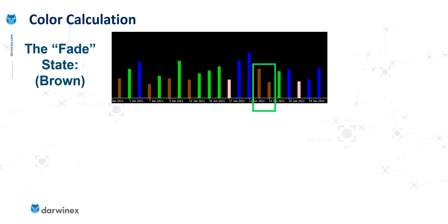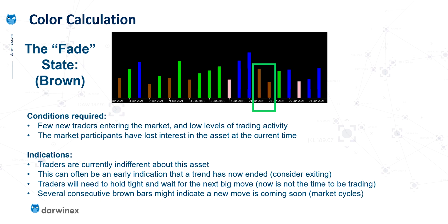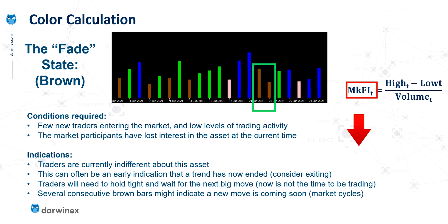Moving on to the fade state, represented by brown-coloured bars, the conditions are quite different — the opposite, in fact. Here we're looking for a visible decrease in the Market Facilitation Index, but also a decrease in volume. These two factors indicate that there are not many new traders entering the market, trading activity is low, and we're not observing any strong directional move in the market because there appears to be a loss of interest in this asset at this moment in time.